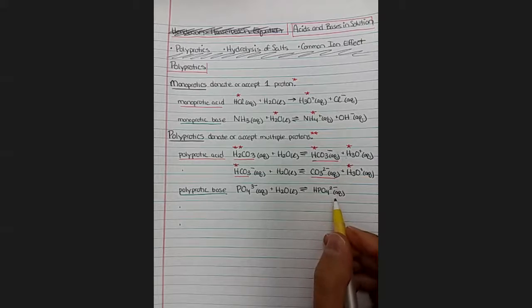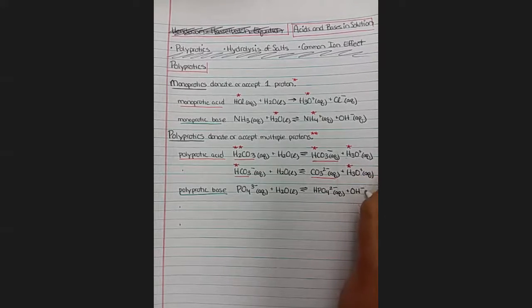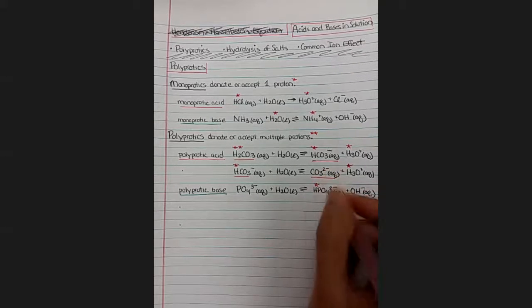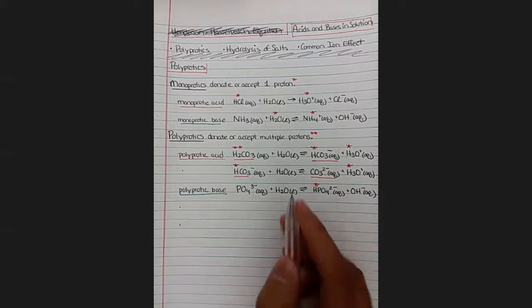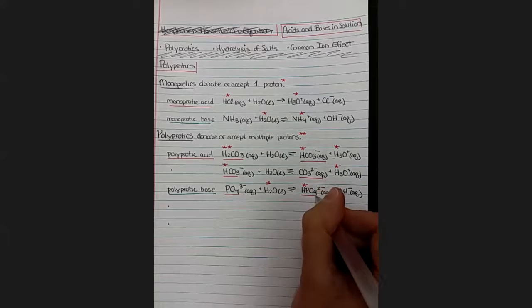Plus hydroxide. So phosphate gained a proton and that proton was donated by the water. We started with phosphate and we formed hydrogen phosphate.